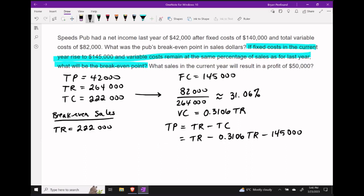If we're curious about the break even point, we do need to set our total profit equal to zero. Let's add our $145,000 to both sides and then clean up our like terms. So we have one TR minus 0.3106 TRs and that gives us 0.6894 times our total revenue.